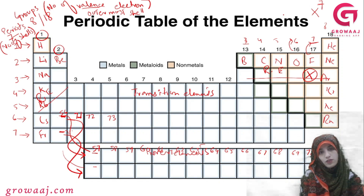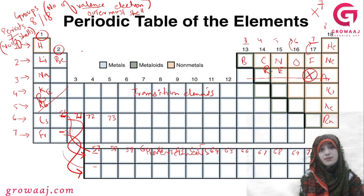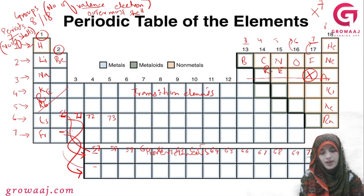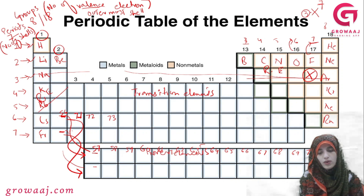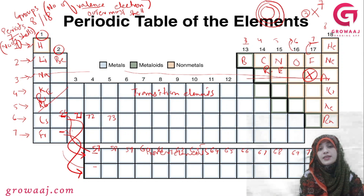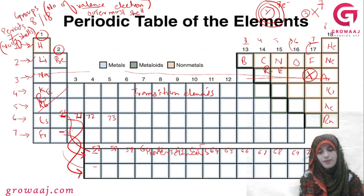It means 7 electrons in the 7th group. Now the number of shells will equal the period number. If this element is in the 3rd period, we go through the first shell, the second shell, and the third shell. So the valence electrons will be 7 and the number of shells will be 3 because it belongs to the third period.